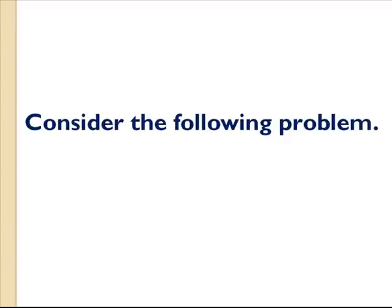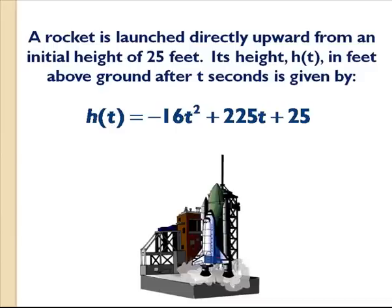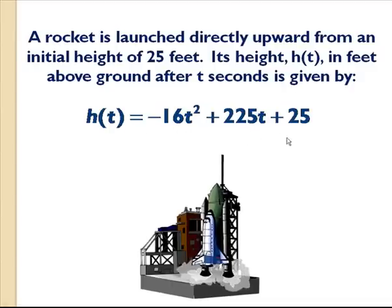Let's consider the following problem. We have a rocket which is launched directly upward from an initial height of 25 feet. Its height, h(t), in feet above ground after t seconds is given by h(t) equals negative 16t squared plus 225t plus 25. This is also our quadratic function.